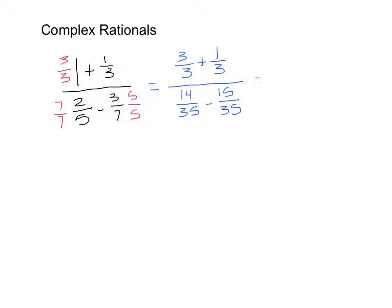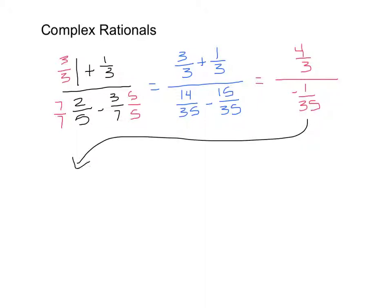Now let's simplify. 3 over 3 plus 1 over 3 is 4 over 3. 14 over 35 minus 15 over 35 is negative 1 over 35. Now this is just a fraction divided by another fraction. Remember, when you're dividing by a fraction, you're really multiplying by its reciprocal. So this problem becomes 4 over 3 times the reciprocal of negative 1 over 35, which is negative 35 over 1.